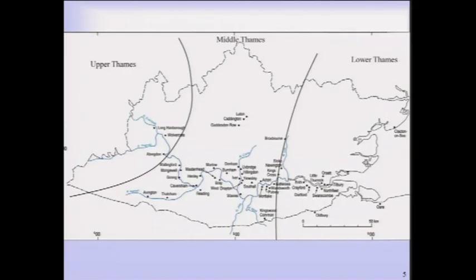We can broadly split the Thames into three parts: the Upper Thames centred around Oxford, the Middle Thames around Reading extending into central London, and the Lower Thames where the river enters the sea. The terraces are preserved in varying proportions between those three different parts, because there is a legacy of erosion, dissection, and incision that has left sometimes just small remnants of those river deposits preserved.